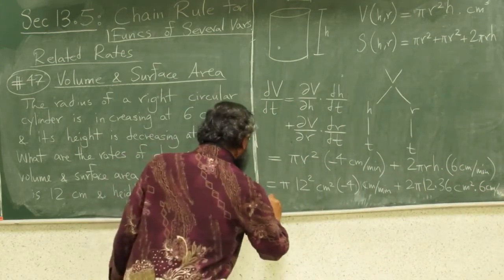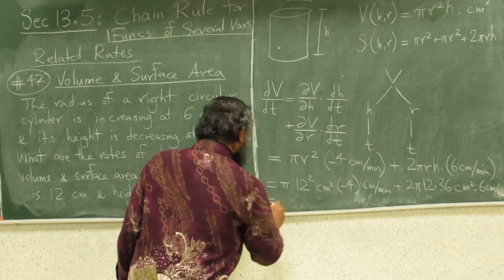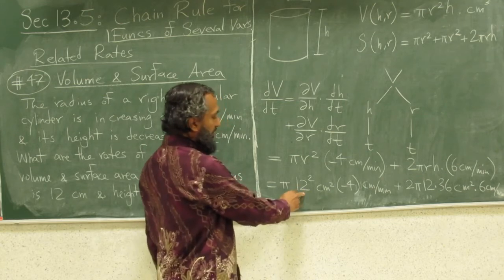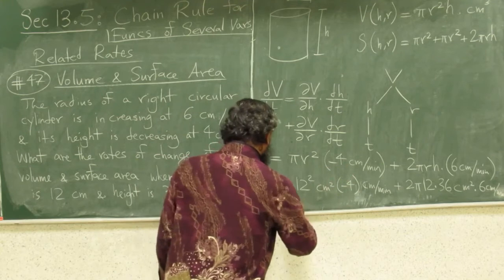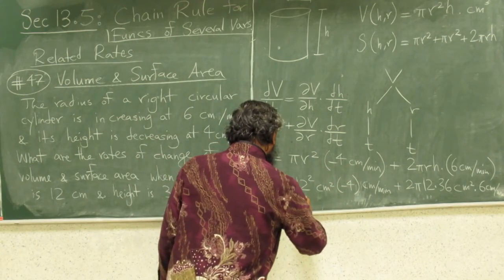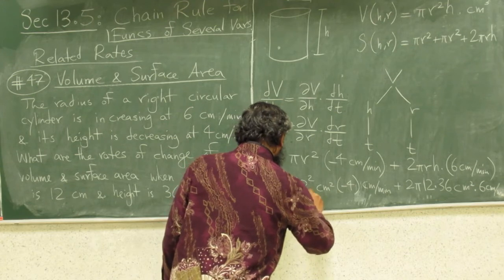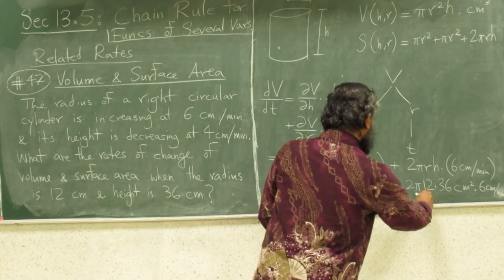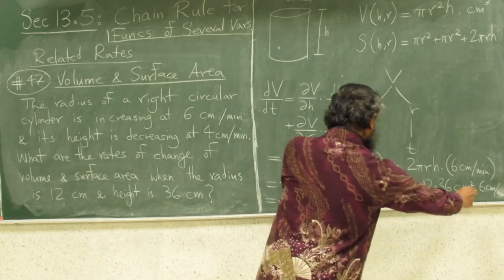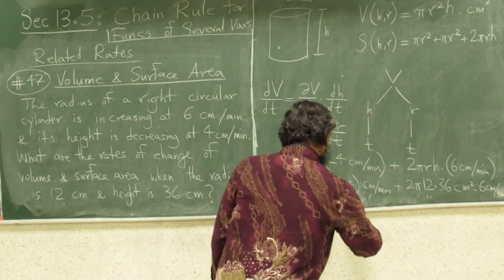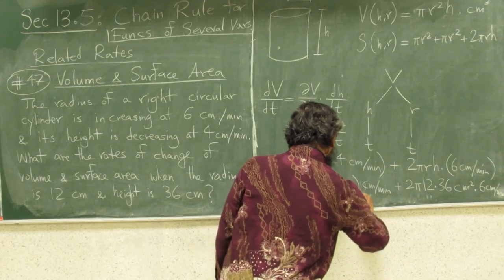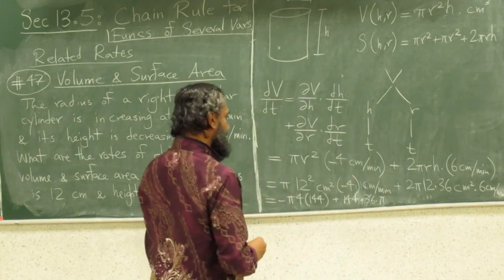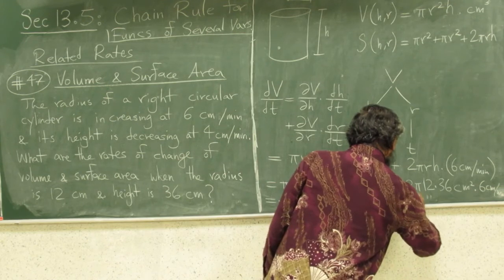If you do the math, you have 144, 12 squared is 144, minus 4, so that's minus pi times 4 times 144. And 2 times 12 is 24, 24 times 6 is 144, and 144 times 36, so that's plus 144 times 36 times pi, centimeter cubed per minute.